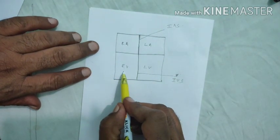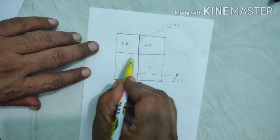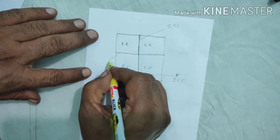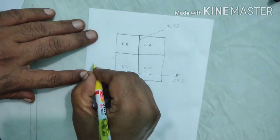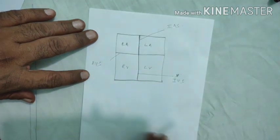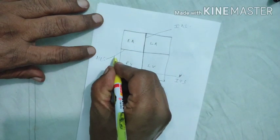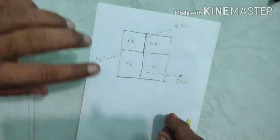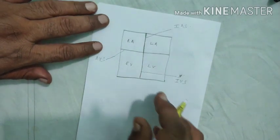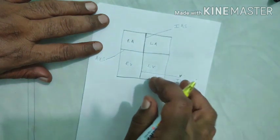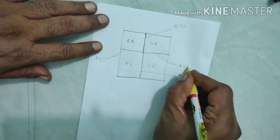Between the right auricle and right ventricle there is one more septum. This septum is called the auriculoventricular septum — because it is present between the auricle and ventricle. Similarly, between the left auricle and left ventricle there is also an auriculoventricular septum.